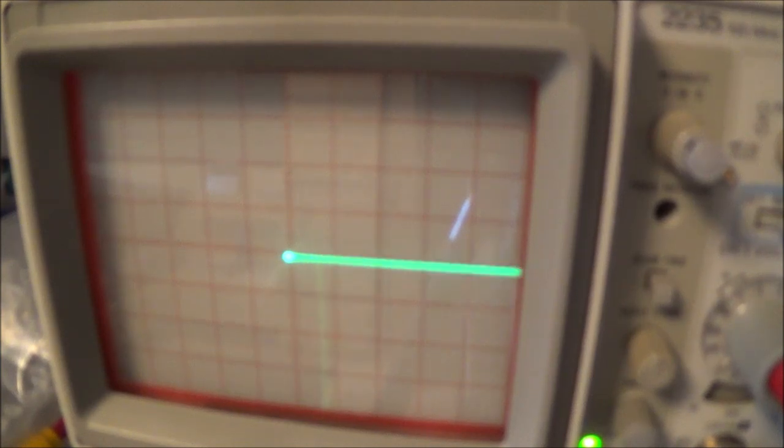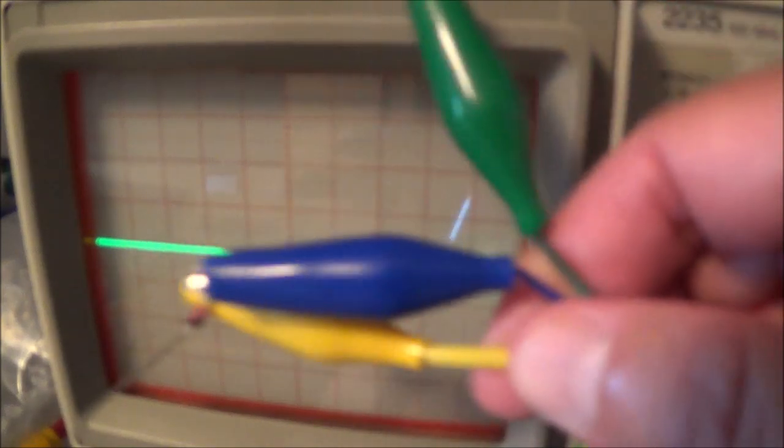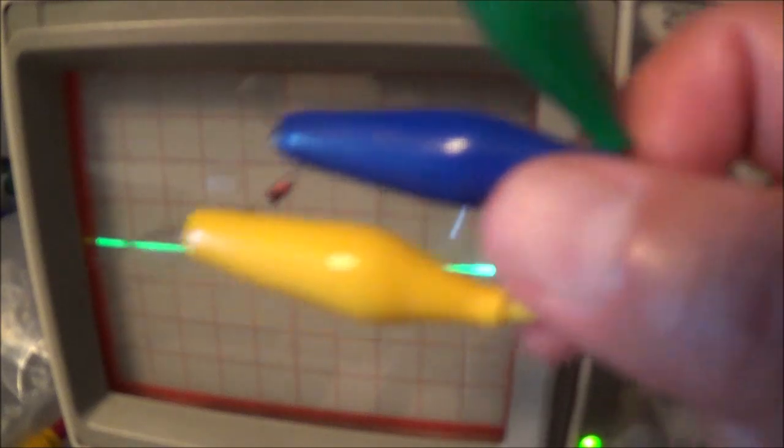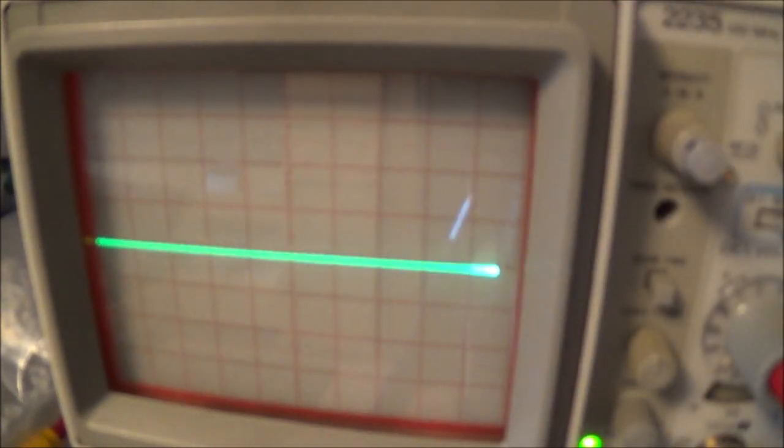I think that about covers about all about the zener diodes. Of course you can see if the zener diode would be open. Now I'm going to remove one of the leads here to the curve tracer. See, that would be an open. That's what that would look like.